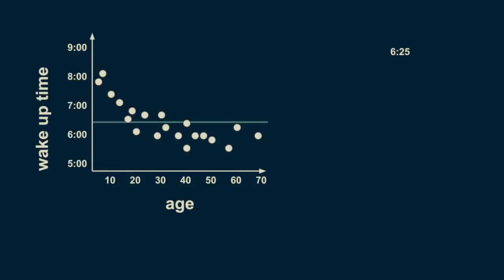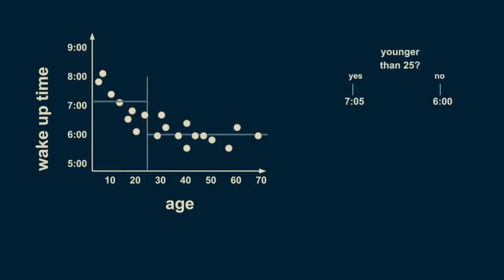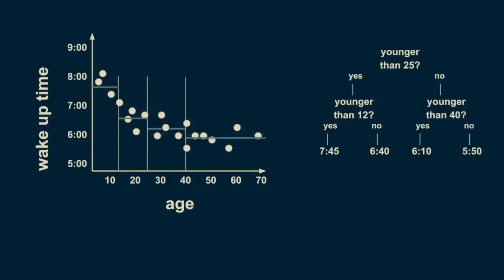A reasonable first split is at age 25. On average, people younger than 25 wake up at 7:05, and people older than 25 wake up at 6:00. There's still a lot of variation in the younger group, so we can split it again. Now people younger than 12 can be estimated to wake up at 7:45, and people between 12 and 25 can be estimated to wake up at 6:40. The over-25 group can be meaningfully subdivided too. Those between 25 and 40 wake up on average at 6:10, and those between 40 and 70 wake up on average at 5:50. By slicing again on age 8, we can refine the estimates to more closely fit the data.